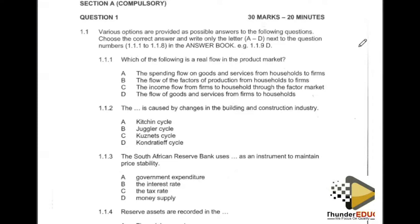You are given an example of how to answer this section in a perfect manner. Now let's start the work. Question 1.1.1 reads: which of the following is a real flow in the product market? Before you jump to the answer, you should always make sure that you understand the key concepts given in a question, and check the action verbs used in that particular question.